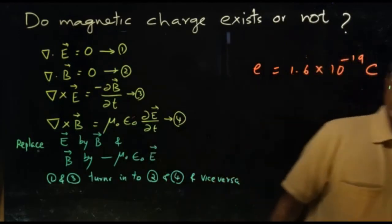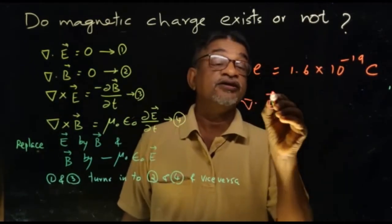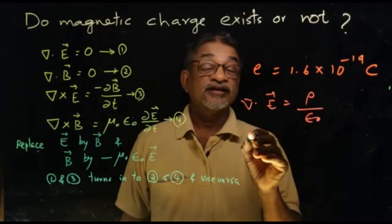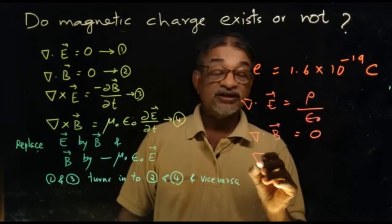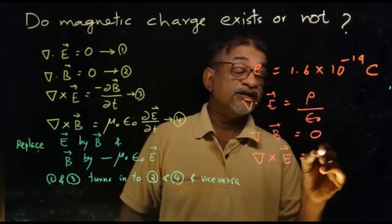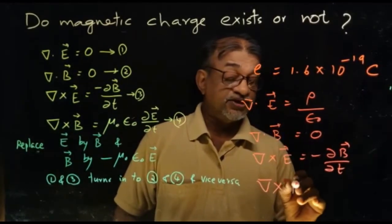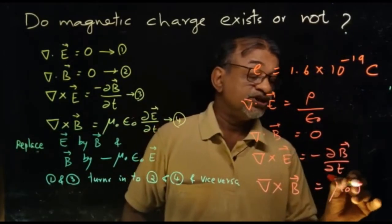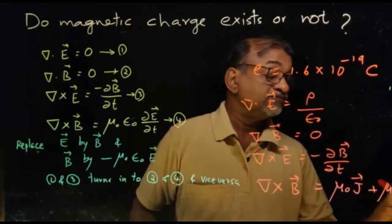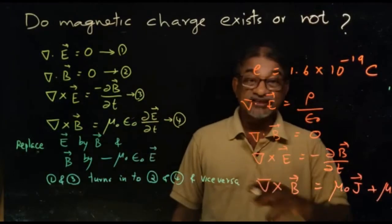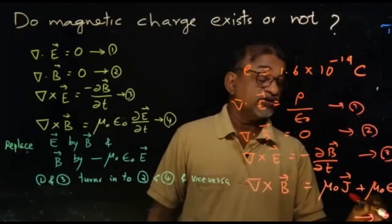As you know, we have four Maxwell's equations. First: ∇·E = ρ/ε₀. Second: ∇·B = 0. Third: ∇×E = −∂B/∂t. Fourth: ∇×B = μ₀J + μ₀ε₀ ∂E/∂t. These are the four Maxwell's equations.